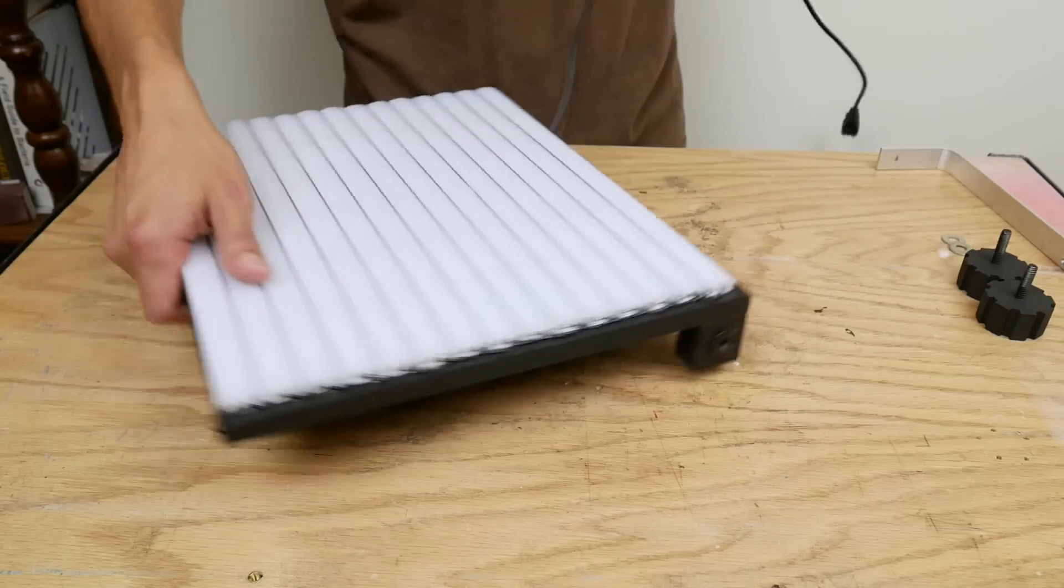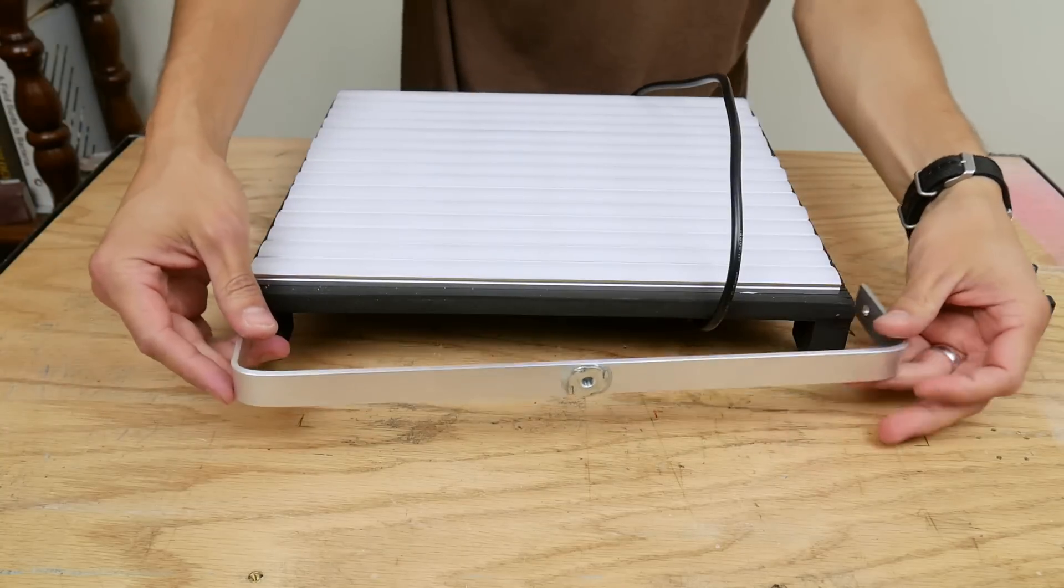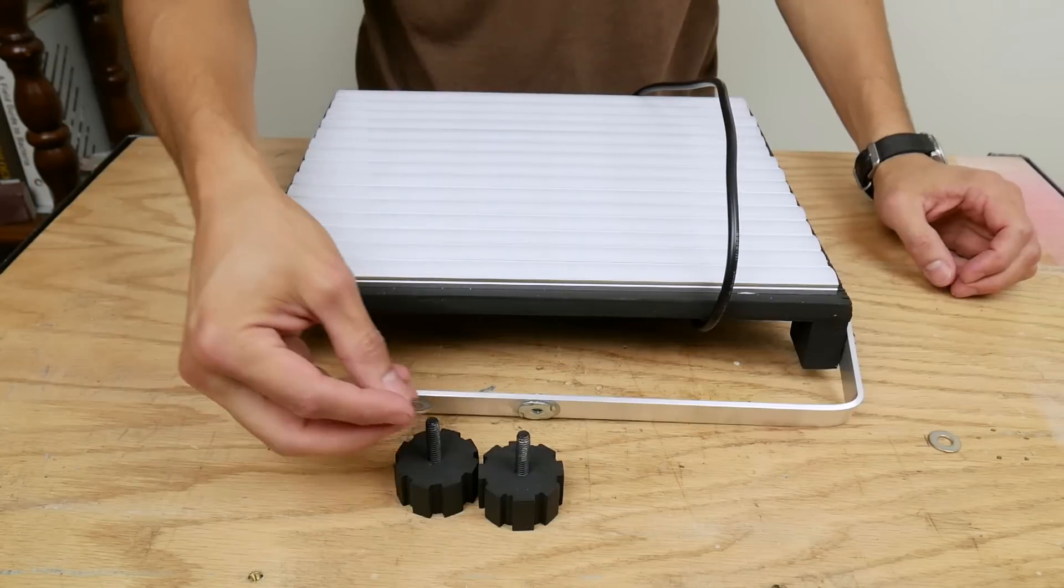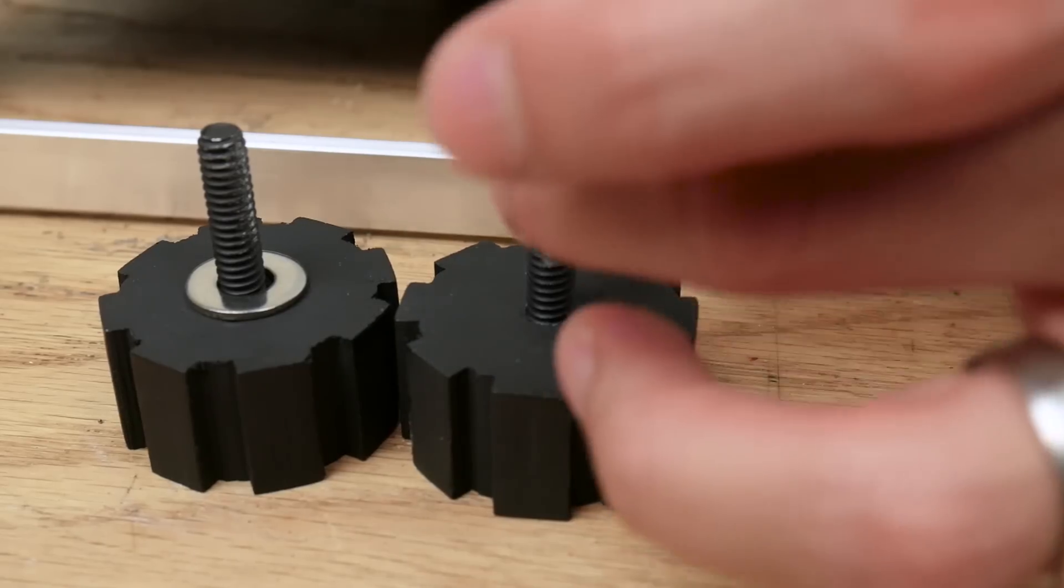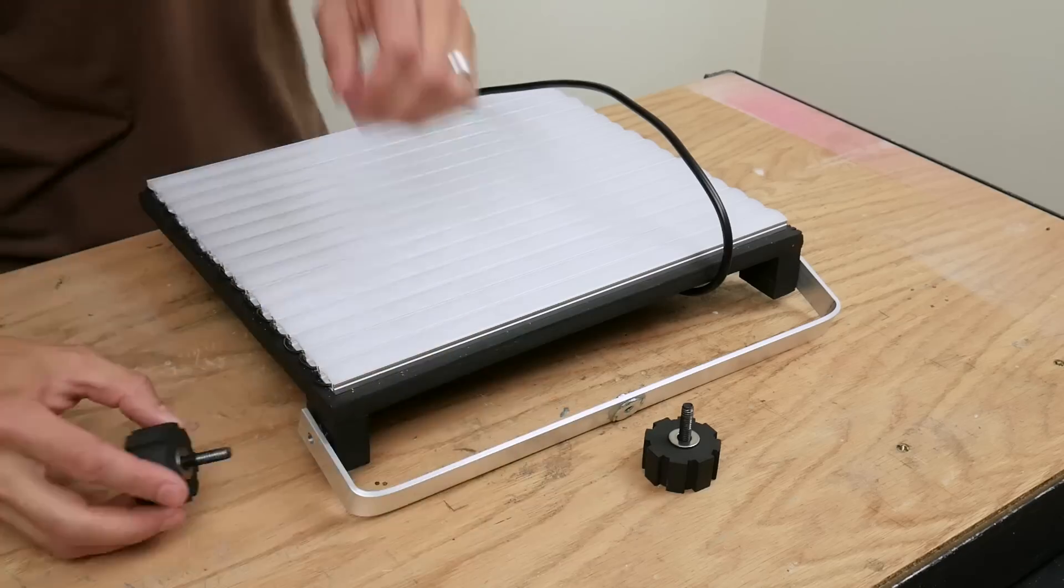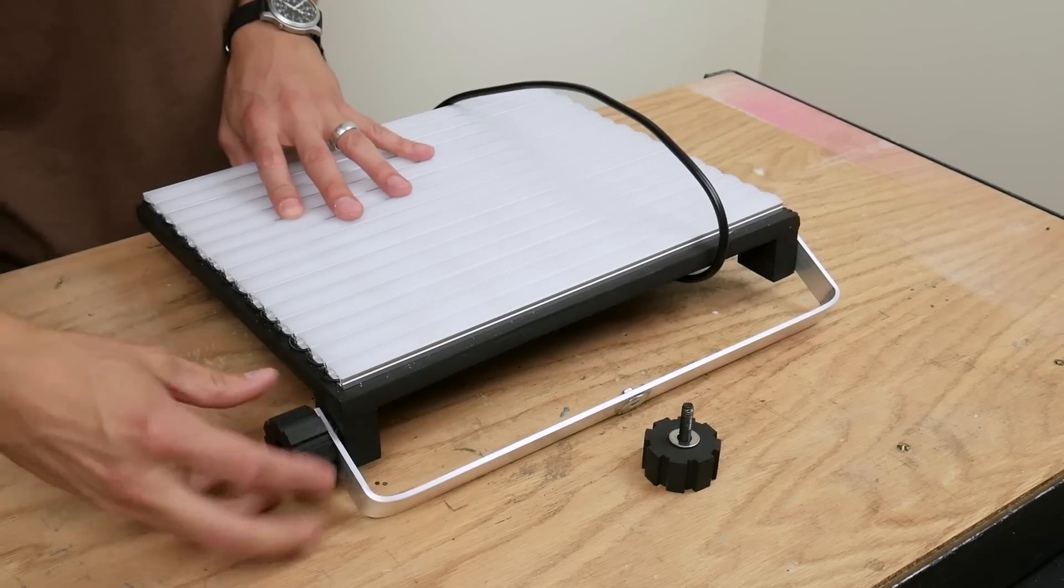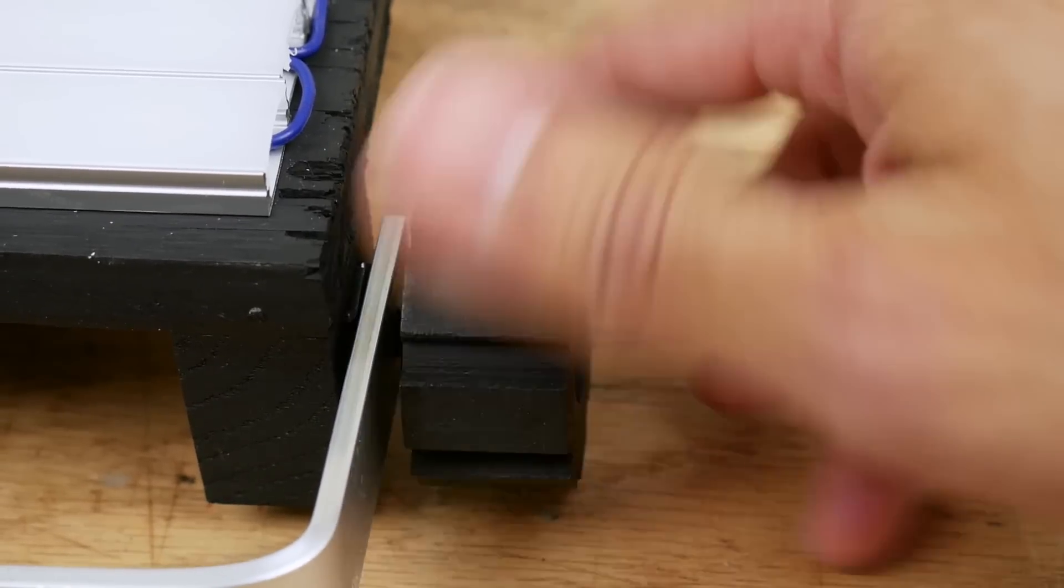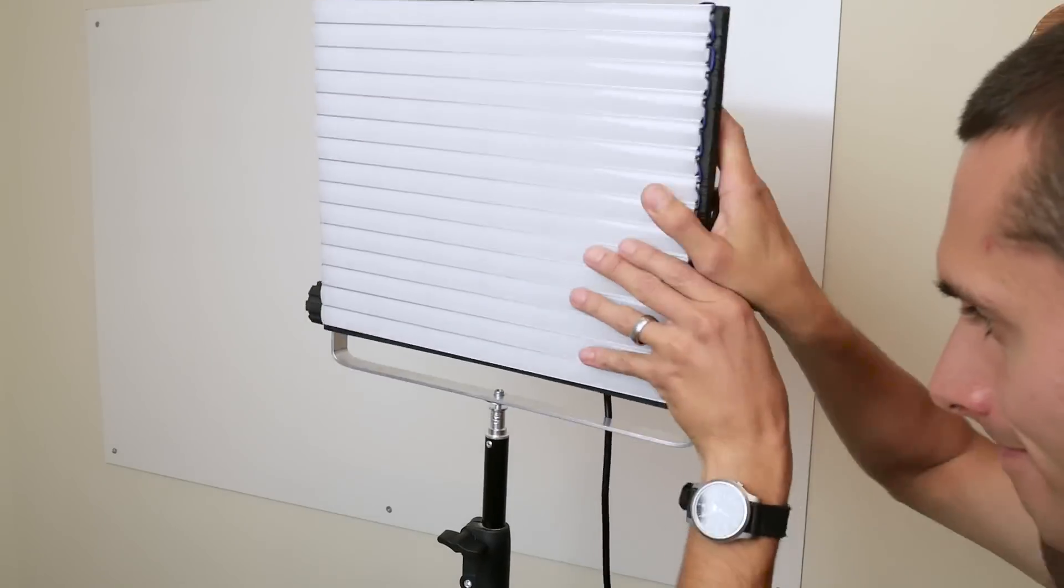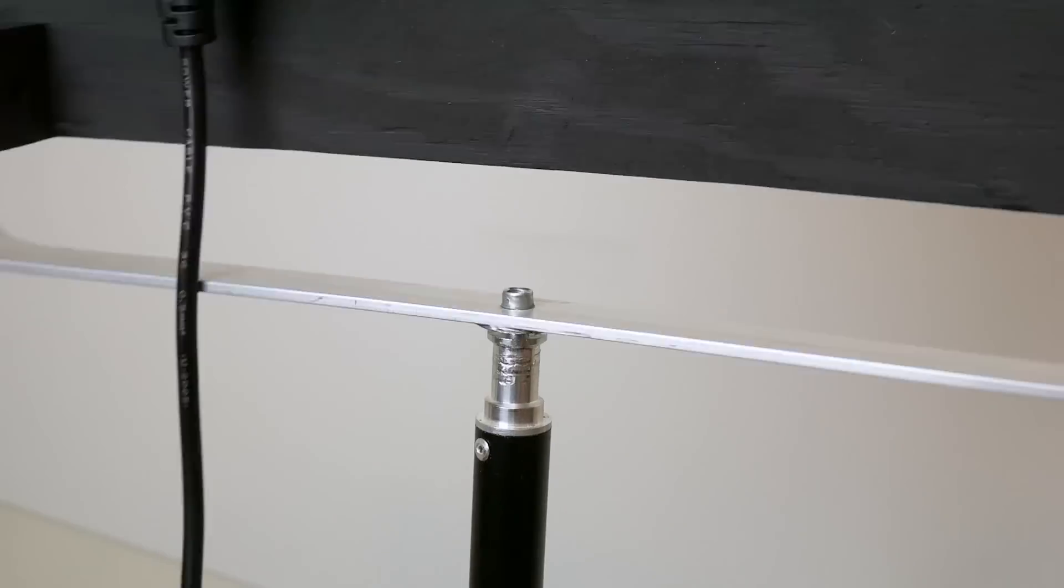I put the bracket in place on the bottom of the panel. I added a washer to each knob and screwed the knobs into the bracket. Then I spun the light onto a light stand. And it was ready for action.